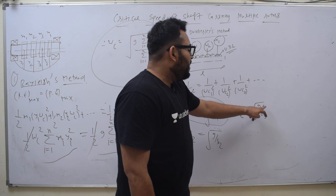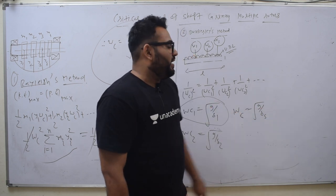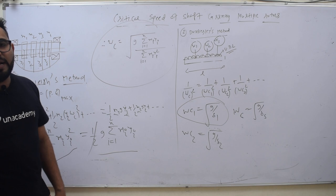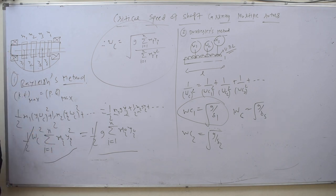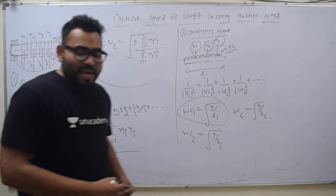Now critical speed due to the self-weight of the beam: omega C equals under root G by delta S, deflection due to the self-weight. So you have to see this above because it will be used in the example. I hope you like this video, share it and subscribe.